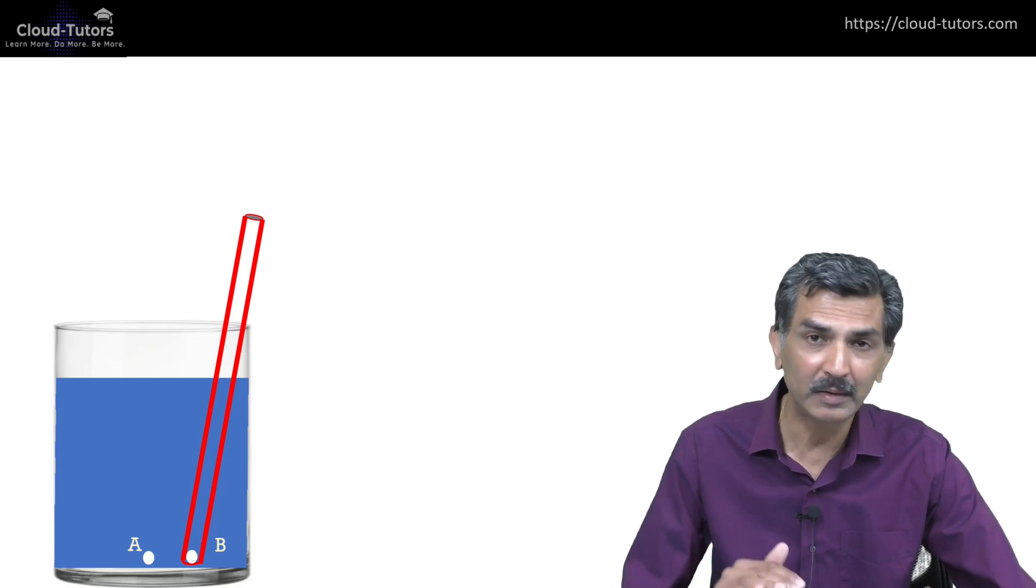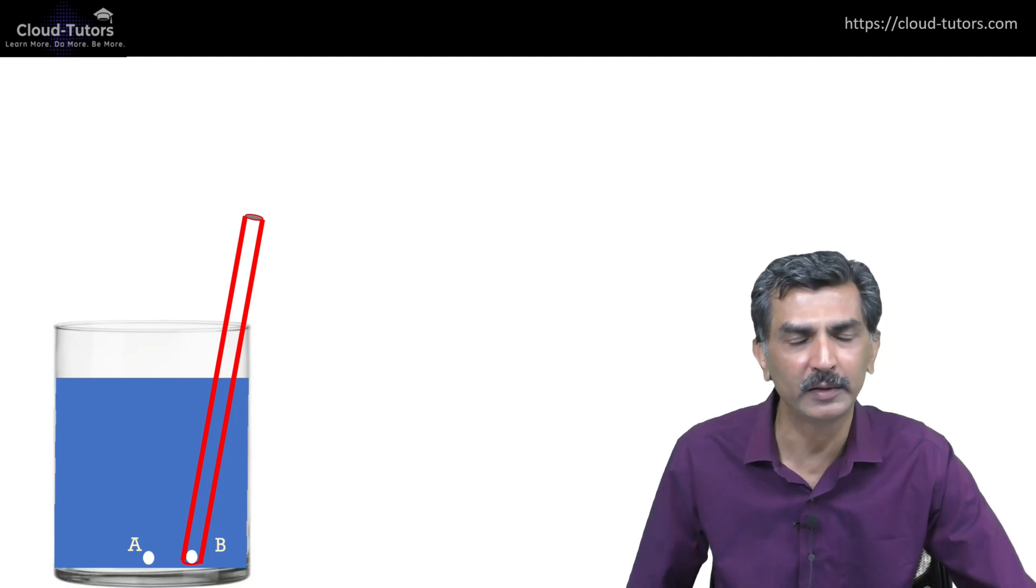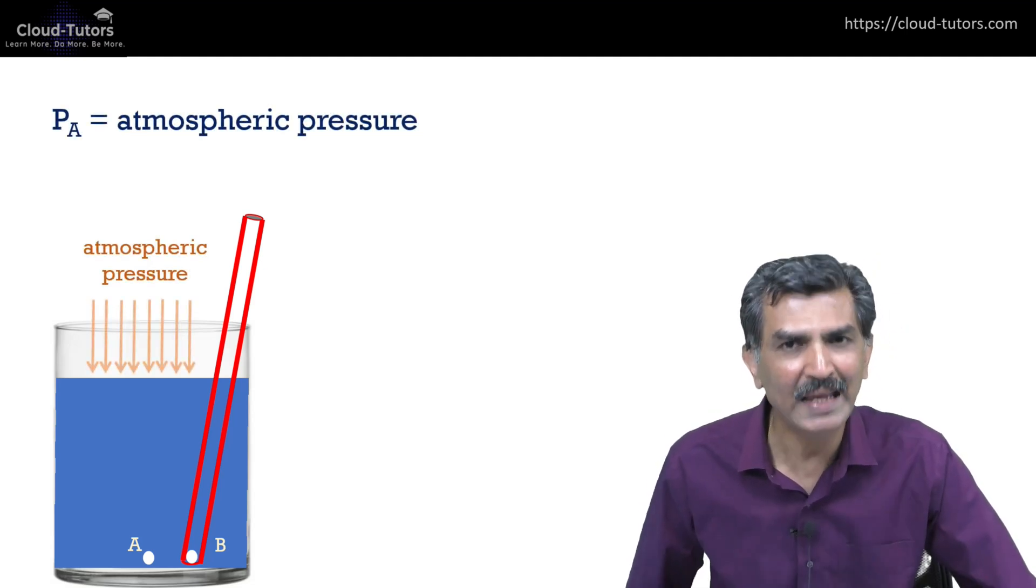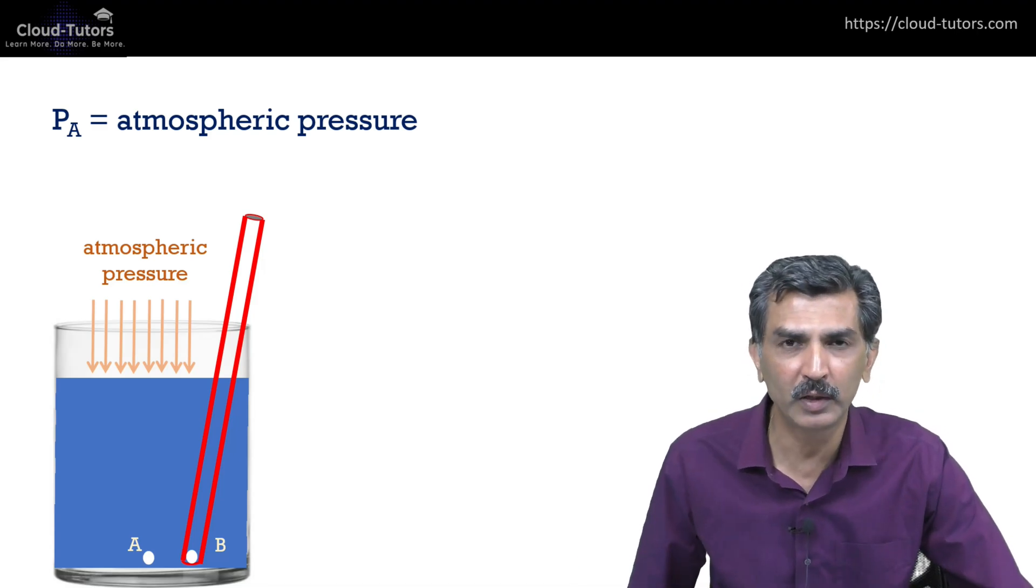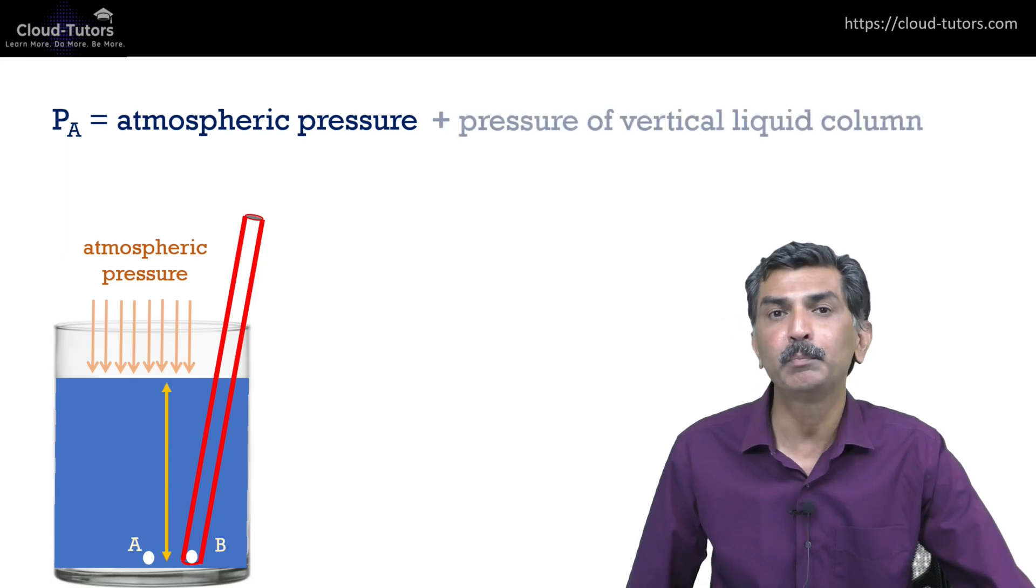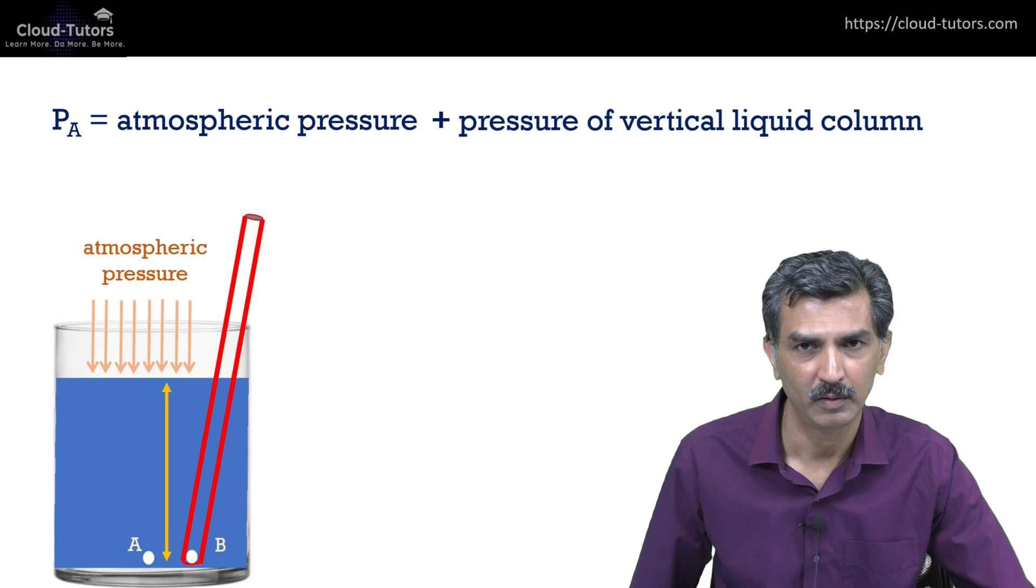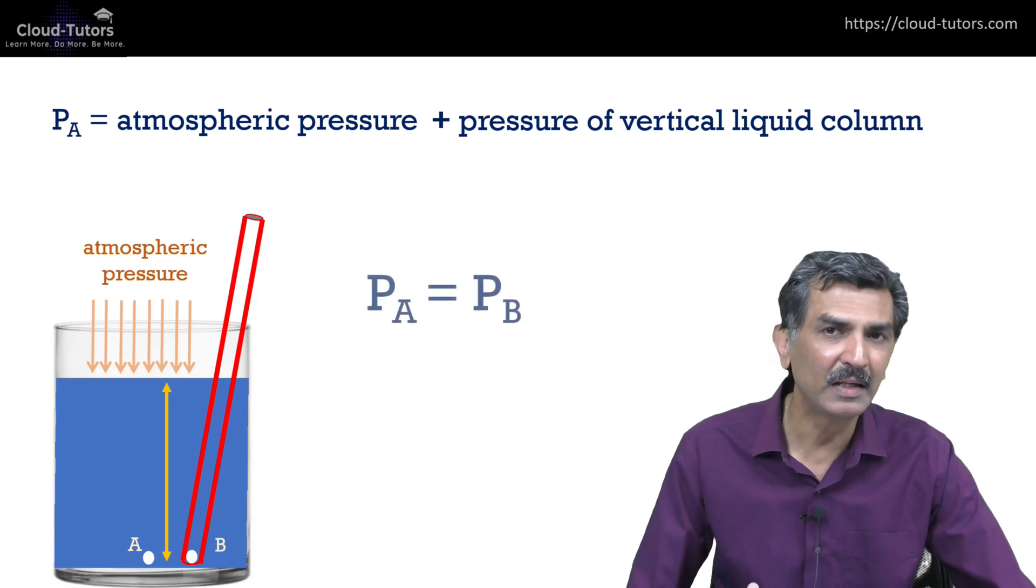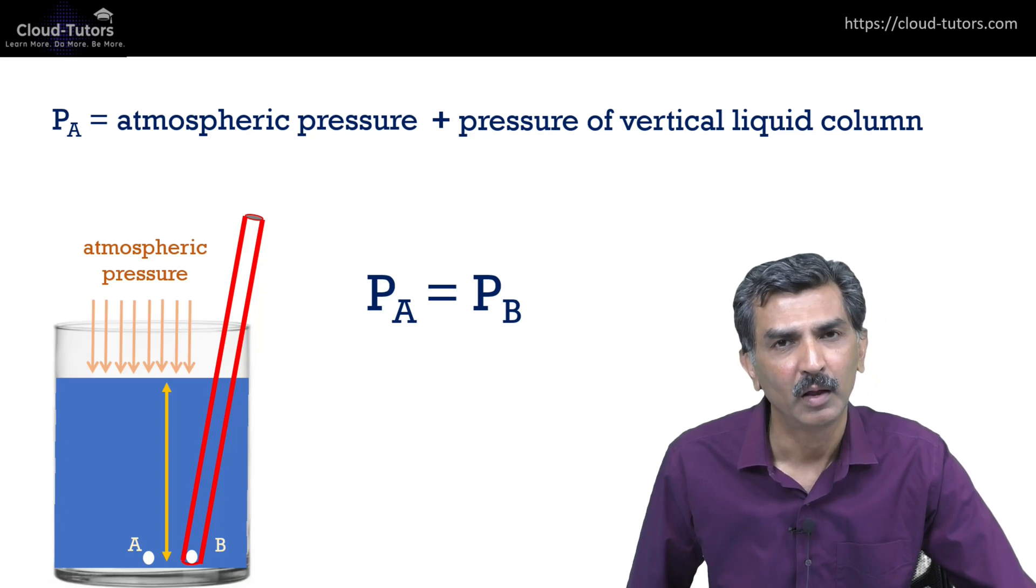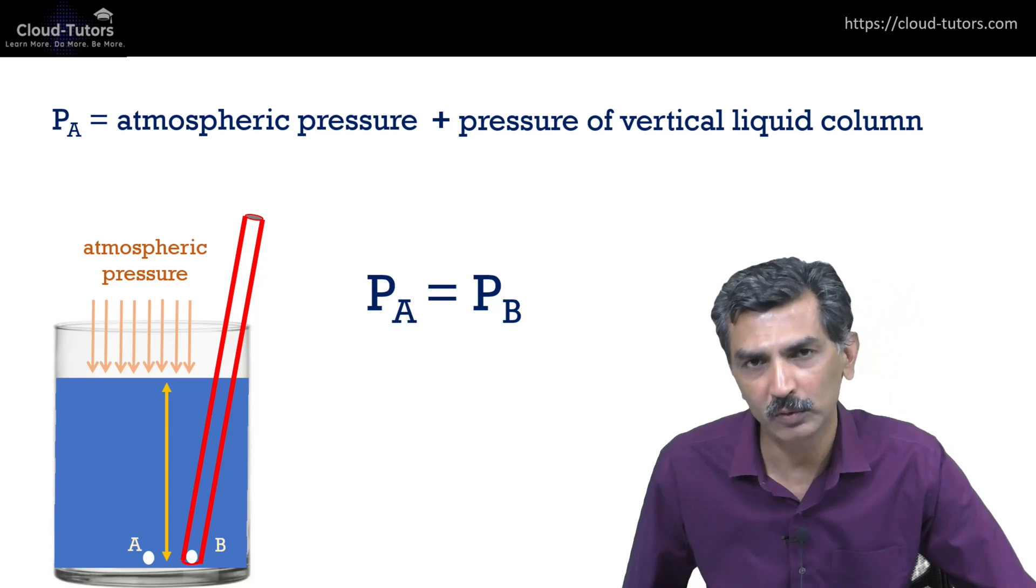If you take two points, A and B, both at the same depth - one is outside the straw (point A) and one inside - the pressure at point A, again, is a combination of two things: it's the atmospheric pressure acting on the surface of the liquid plus the pressure of the vertical liquid column. Pressure at A is equal to pressure at B, and that is essential to understanding how the straw works.